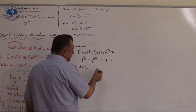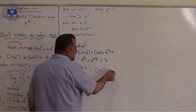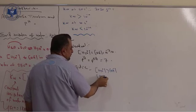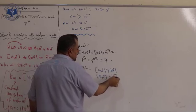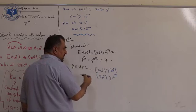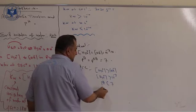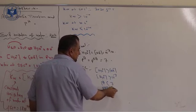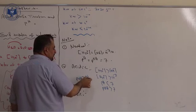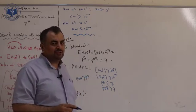In an acidic solution, concentration of hydronium is greater than concentration of hydroxide. Concentration of hydronium is bigger than 10 to the power negative 7 — for example 10 to the power negative 6, 5, 4, 3, 2, 1. pH is less than 7, pOH is greater than 7, and pOH is bigger than pH.